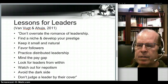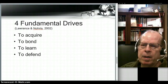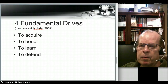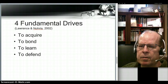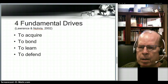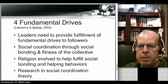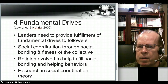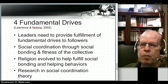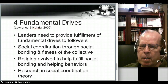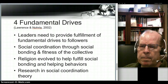There's one other theory I want to mention, written in 2002 — a book by Lawrence and Nohria called Driven. They describe four fundamental evolutionary drives: to acquire, to bond, to learn, and to defend. Leaders need to provide fulfillment of these four fundamental drives to their followers in their collectives. It's a social coordination theory that focuses on social bonding and fitness of the collective through fulfillment of the four fundamental drives. They also mention that religion evolved to help fulfill social bonding and helping behaviors, which fits with their theory. There's a lot of research being done today in social coordination theory.